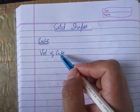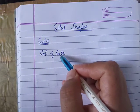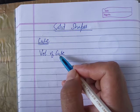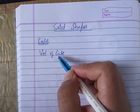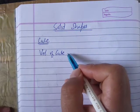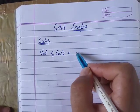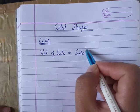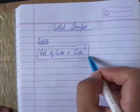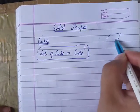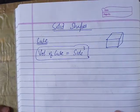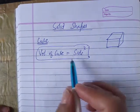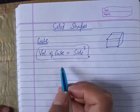The first exercise is the volume of cube. This is the volume of cube, which is side cubed. This is the cube shape. This is the side of the cube.